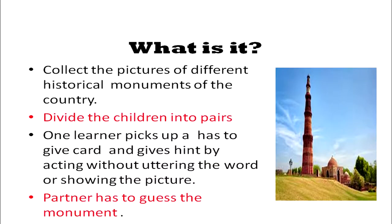This kind of activity can be done in various setups. You can have a 'What is it?' game where you have cards with pictures of historical monuments or historical places. Again it's a pair game, but now the learner picks up the card and can only mime — act without uttering any word — and within one minute gives clues to the partner who has to guess the place. If the partner guesses it, they move on to another card.